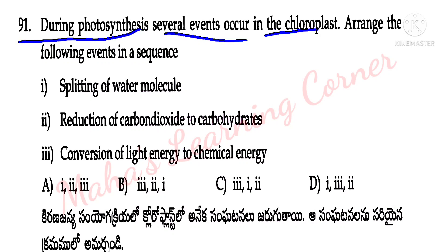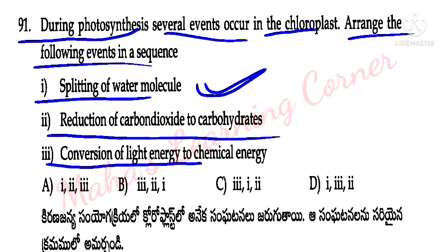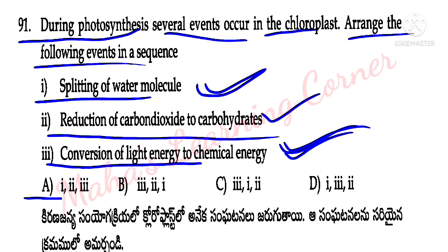During photosynthesis, several events occur in the chloroplast. Arrange the following events in sequence: splitting of water molecule, reduction of carbon dioxide to carbohydrates, conversion of light energy to chemical energy. Splitting of water molecule occurs in the light reaction; then in the dark reaction, carbon dioxide is reduced to carbohydrate; finally light energy is converted to chemical energy. Option A is the correct answer.